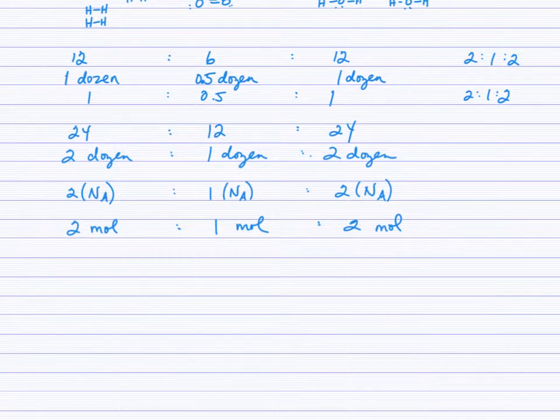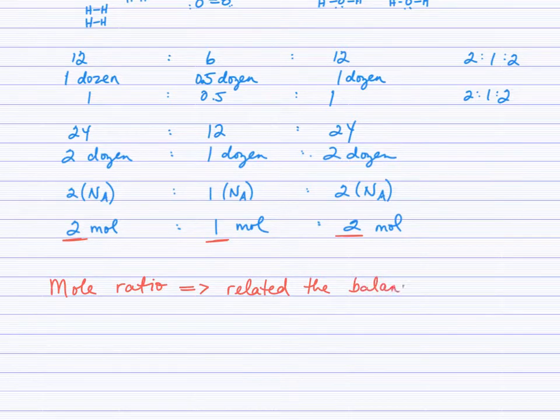Because we work with such tiny particles in large groupings called moles, we call the coefficients in the balanced equation - 2, 1, and 2 - a mole ratio. The mole ratio is related to the balancing coefficients in your balanced equation.